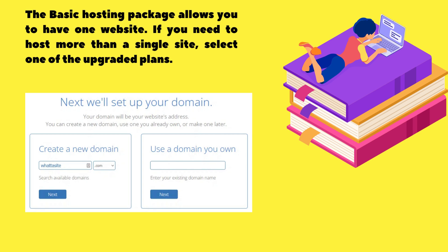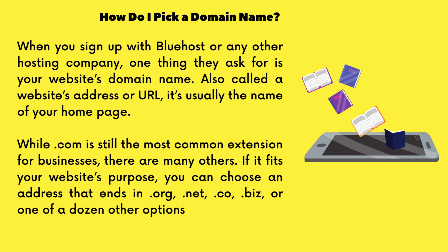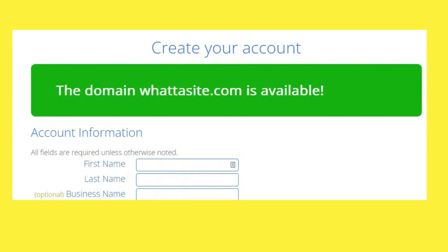.com is still the most common extension for businesses, but there are many others. If it fits your website's purpose, you can choose an address that ends in .org, .net, .co, .biz, or one of a dozen other options. Enter a domain name that you'd like to use in Bluehost's 'Create a New Domain' search box, then click Next to see if it's already registered to someone else. If not, you'll see the checkout page.